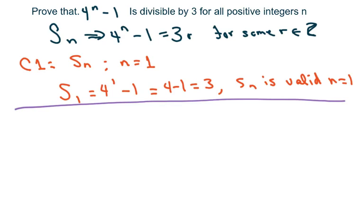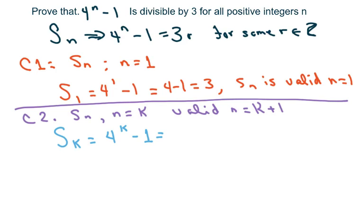Then for condition 2, assume that Sn is valid for n equals k. So I'm going to show that n equals k, and use this assumption to prove that it's also valid for n equals k plus 1, and that would be the next term. So basically, our S of k, we're just going to write 4 to the k minus 1 equals 3r for some integer r, where r belongs to the integers.